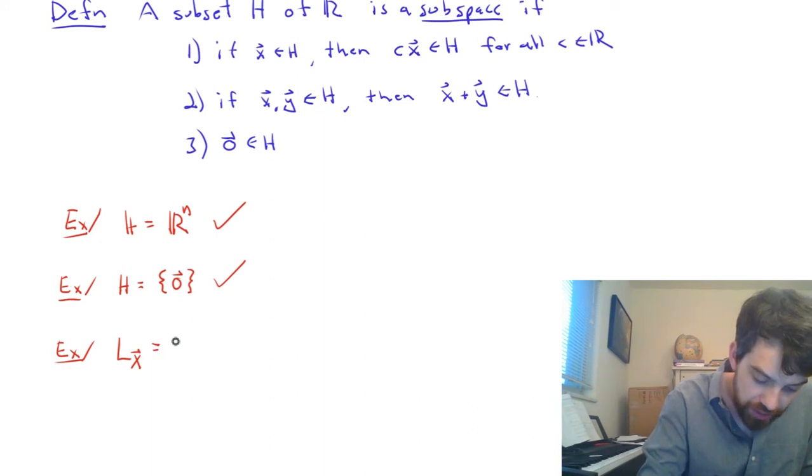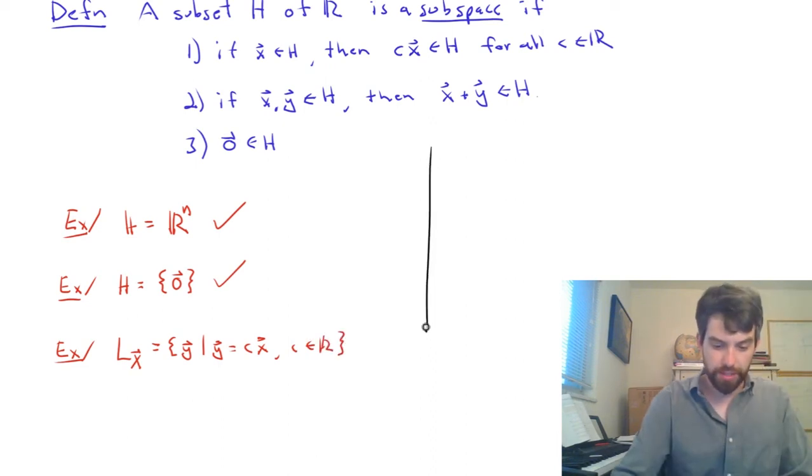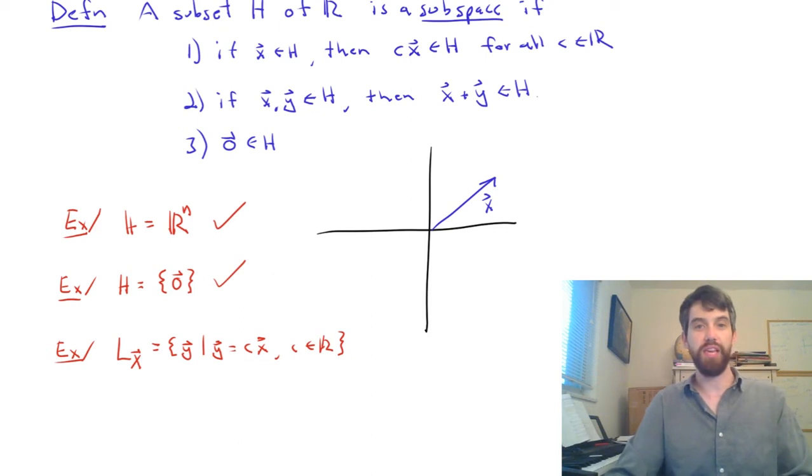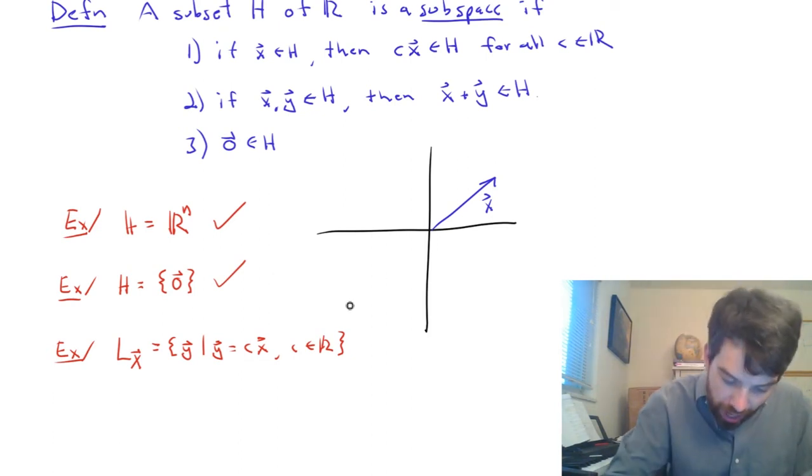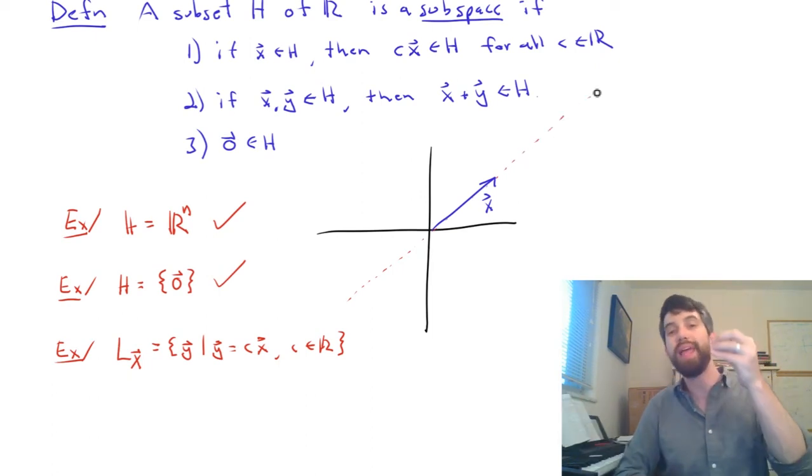And it's defined to be the following set. It's the set of all vectors Y, where that Y can be written as C times X for C being just some particular scalar. That is, we can imagine that I've got some particular vector. That's my X vector. And then, what is going to be the line through X? Well, I'll do it in a dotted. It's all of these vectors where you take that line and you can stretch it out any amount. You can multiply any C to it.